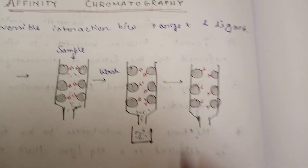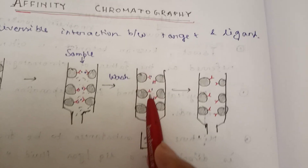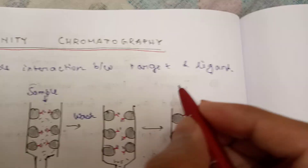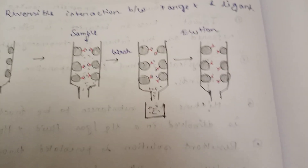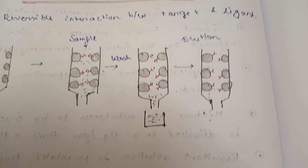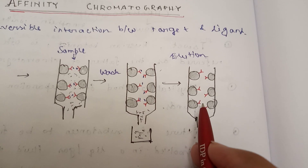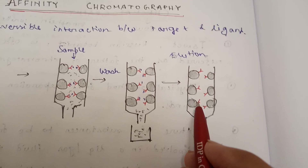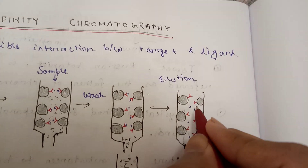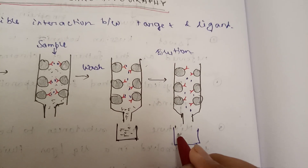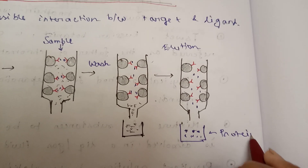Now in this column, we only have our protein of interest which is bound to its ligand. But you have to separate it. Here comes the elution part. Elution can be achieved by changing the pH or adding salt — adding salt will help in destabilizing this bond. So the protein will be unbound from its ligand, and now we can collect our protein of interest.